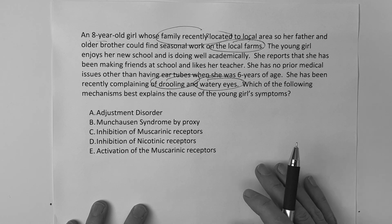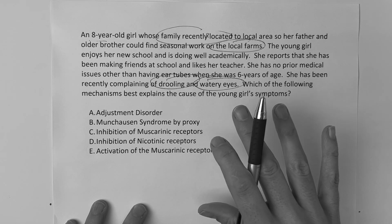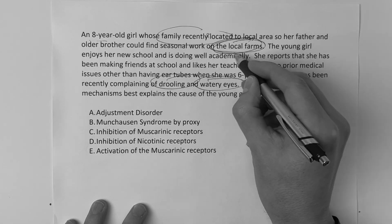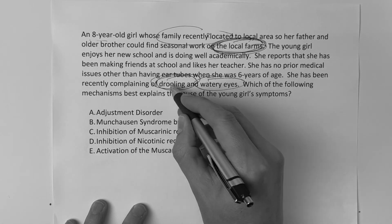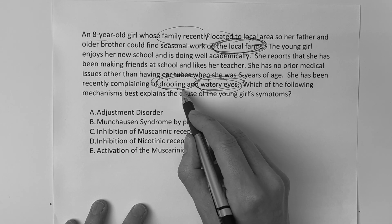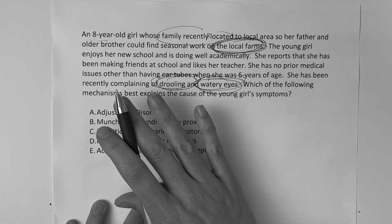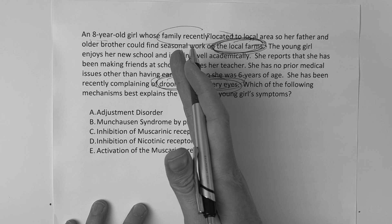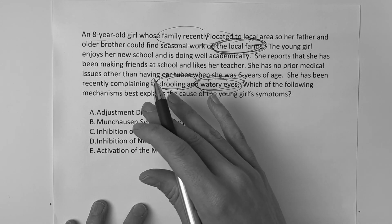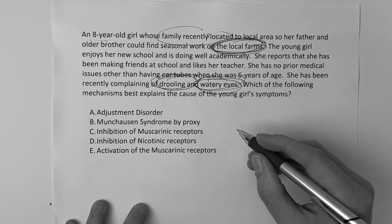So what are we thinking? The USMLE likes to test your knowledge on this farm scenario. She's having drooling and watery eyes — this is a wet response. When it's wet, we think too much acetylcholine. If she was dry and not sweating and all that kind of stuff, we would think anticholinergic.